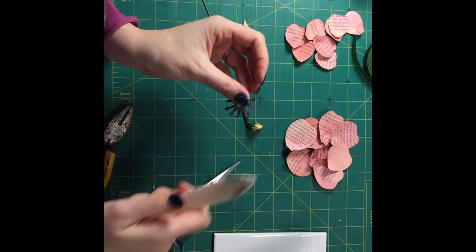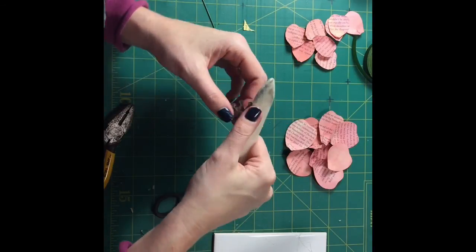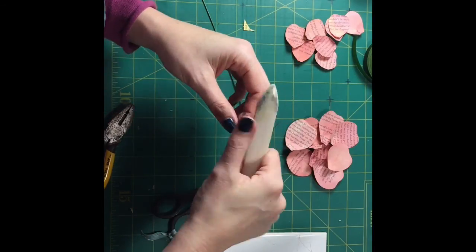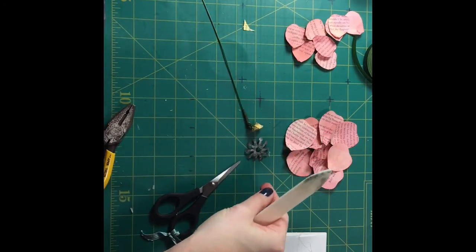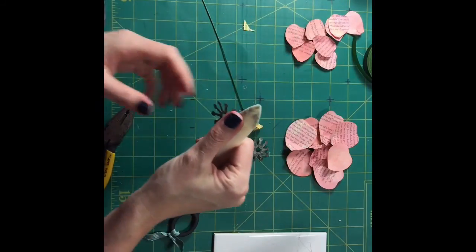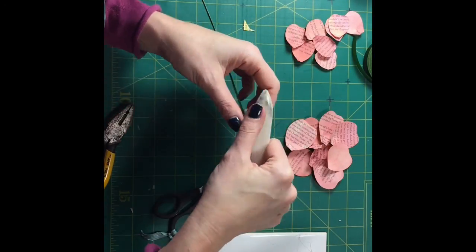Then you get these and you're just gently going to bend the stems like this. So it comes up and then this one the same way. So they stand up a little bit so you get a little bit of dimension.